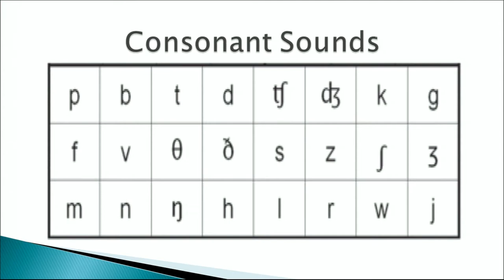This particular IPA symbol denotes the ch sound, as in church, charm, and check. We use a specific symbol because ch can be represented by several different letters in English — for example, ch as in chef, or k as in chemist. Therefore, a unique IPA symbol is used to denote only the ch sound.